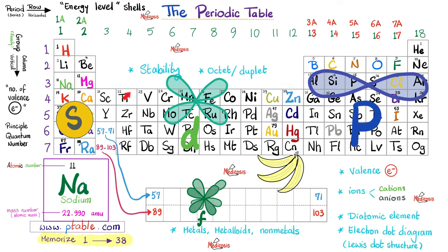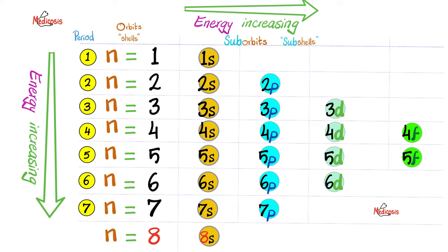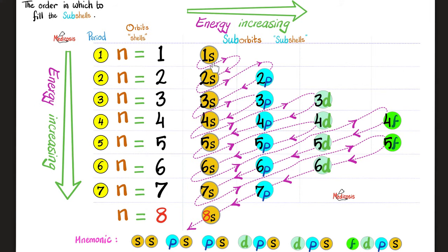Here is the periodic table. Write 'S sub-shell' in the first two columns, 'P sub-shell' on the right block, 'D sub-shell' in the middle transition metals, and 'F sub-shell' in the lanthanides/actinides. How should we write the electron configuration? In the order of energy — from low energy to high energy. As you go downstairs, the energy increases. As you go to the right, the energy increases.